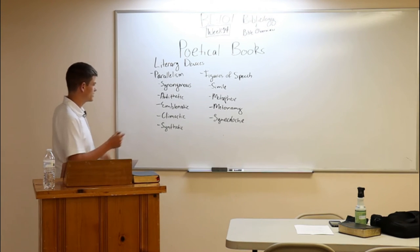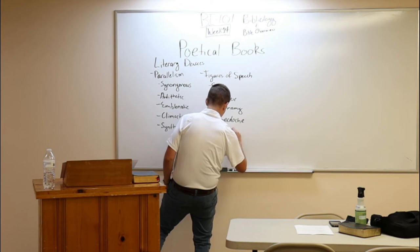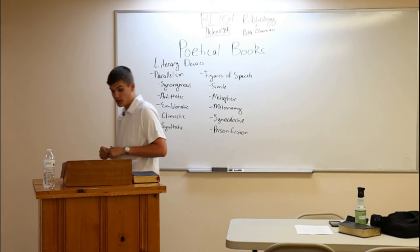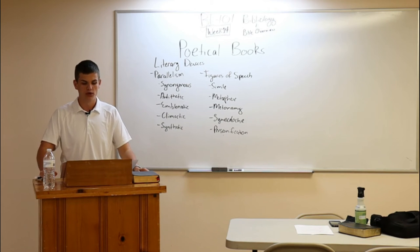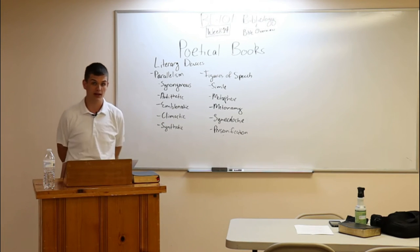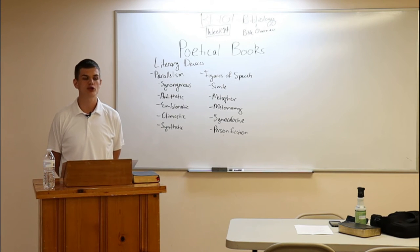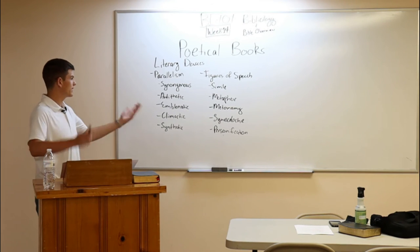The fifth figure of speech is personification — ascribing human attributes to an inanimate object. Psalm 114, verse 3 says 'the sea saw it and fled.' An ocean cannot see anything; it is inanimate and has no eyes. But the psalmist is attributing human characteristics to this inanimate object, and we understand that it is figurative language.